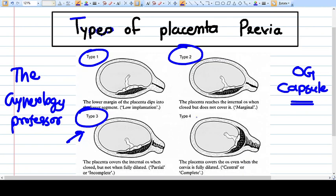Normal delivery can be attempted in type 1 and type 2 of placenta previa but not in type 3 and type 4. Type 3 sometimes happens, but you should not go for normal delivery in type 3. Thank you friends.